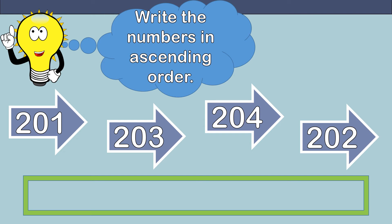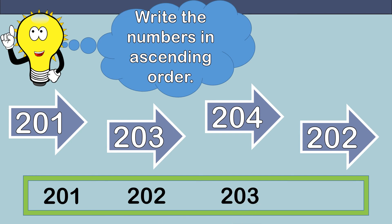What number should we write first? That's right, 201, because it is the smallest number. What number should come next? Yes, 202, then 203. What about the last number? 204, because that is the biggest number. Great job, everybody.